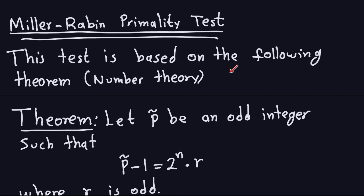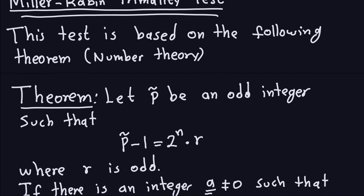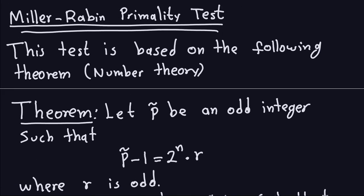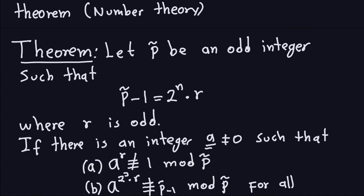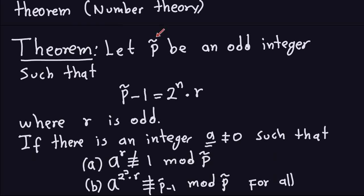This test is based on a theorem from number theory, and I think it's important that you see where it comes from because this is all based on mathematics. So let's look at the theorem. This P — I'm going to call it P-hat — is the number that we want to check for primality. Basically, we want to check whether P-hat is a prime or not.